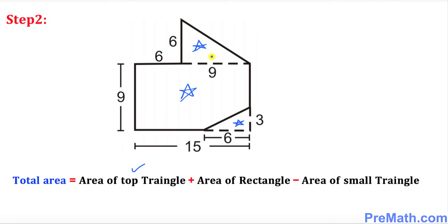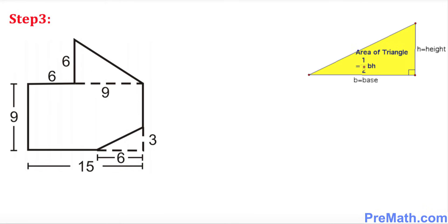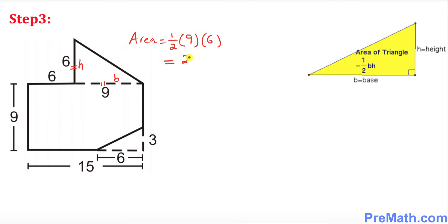Now let's find the area of the two right triangles. The formula is: Area = ½ × base × height. For the top triangle, the base is 9 and the height is 6. So area = ½ × 9 × 6, which gives us 27 square units.